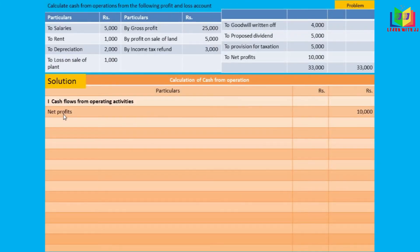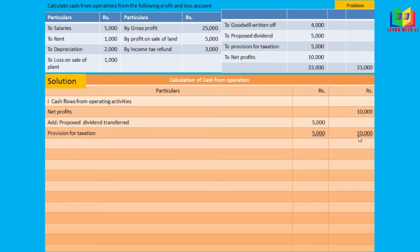We'll start doing the problem as per the format. First we write the net profit, which is 10,000. Now we add proposed dividend of 5,000 and provision for taxation of 5,000, giving 10,000 in the outer column. Adding these gives us 20,000, which is the net profit before tax and extraordinary items.